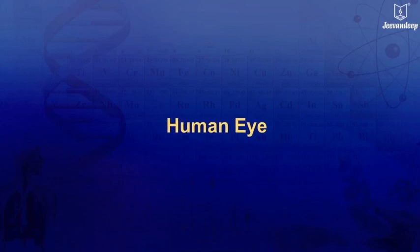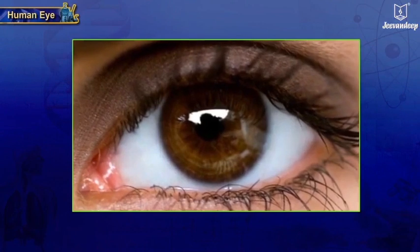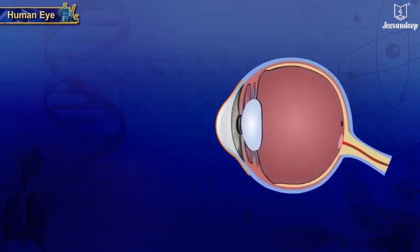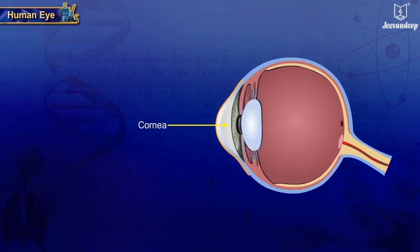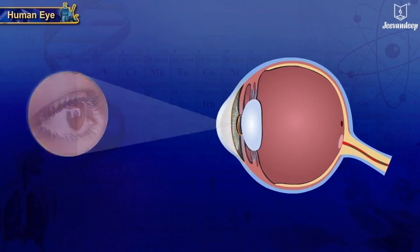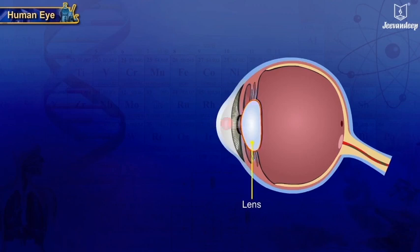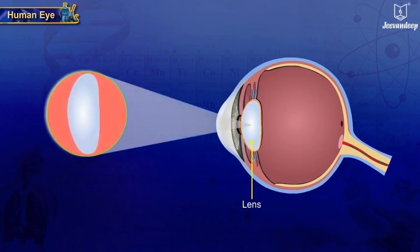The human eye is a complicated structure. The thin transparent membrane in front of the eye is known as the cornea, through which light enters the eye. Behind the cornea is the colored part of the eye, the iris. The iris is a muscular diaphragm that surrounds a small opening called the pupil. Behind the pupil is the lens, which is a transparent biconvex crystalline body.